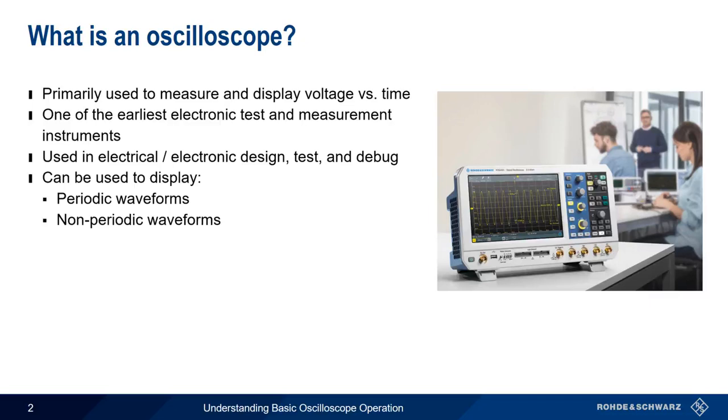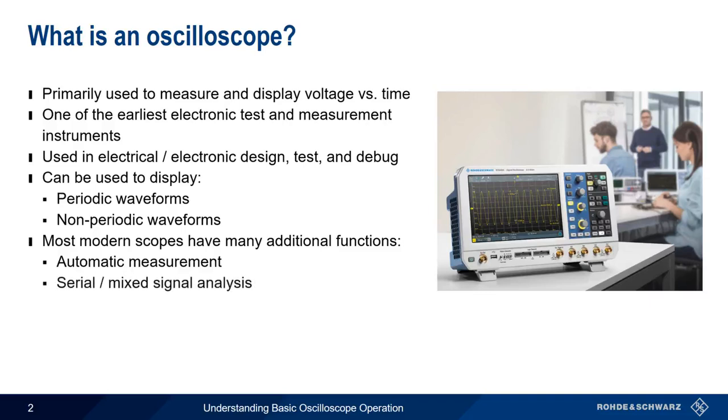In addition to the basic voltage versus time display, modern oscilloscopes often have many additional functions. For example, automatic measurement of things like peak to peak voltage or frequency, the ability to look at serial buses both as bits and at higher layers, as well as the ability to do frequency domain analysis of signals, similar to a spectrum analyzer.